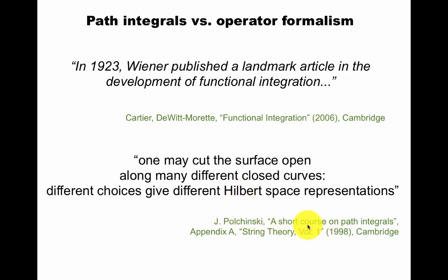In Polchinski's textbook, for example, he has a short course on path integrals, where he argues, one may cut the world sheet surface open along many different closed curves. Different choices give a different Hilbert space representation of going from here to here. So this is an interesting question in string theory.